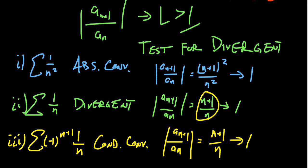One thing to note: the conditionally convergent case must occur in the situation where the limit goes to one — you can't get conditional convergence when L > 1 or L < 1, since those cases give absolute convergence or divergence respectively. So although the ratio test is very powerful, it does have this limitation: when the limit of ratios equals one, you need to use a different convergence test.